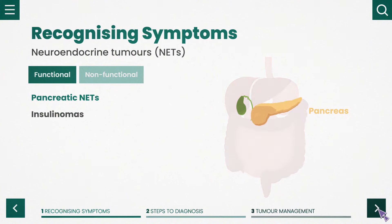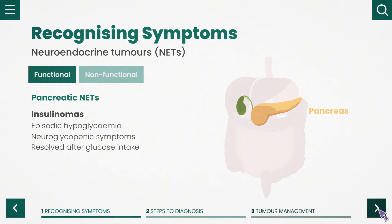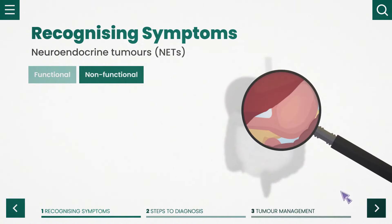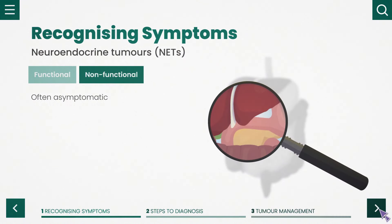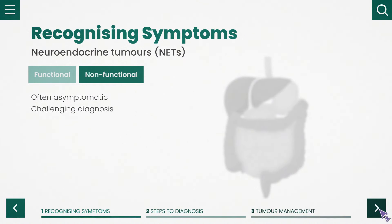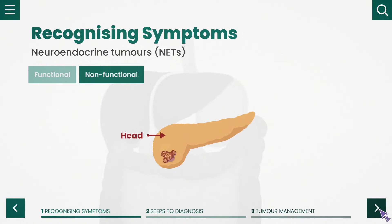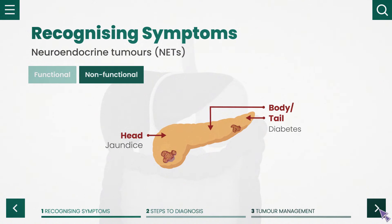Insulinomas can cause episodic hypoglycaemia and neuroglycopenic symptoms which are resolved after glucose intake. Non-functional NETs are generally asymptomatic and therefore often have a delayed and challenging diagnosis. Depending on the location of the tumour on the pancreas, symptoms of a non-functional PANNET include jaundice, diabetes or exocrine pancreatic insufficiency and pain.